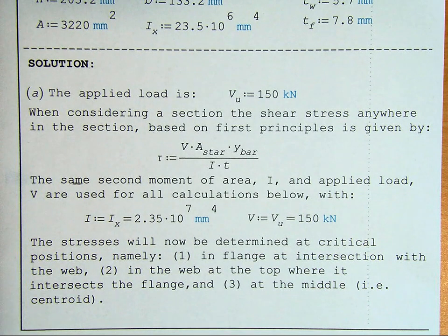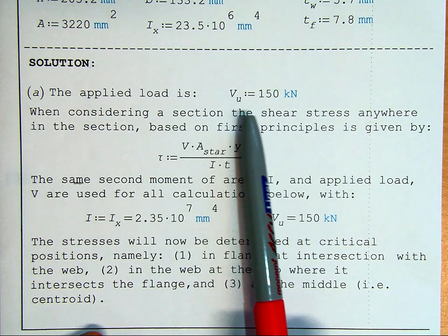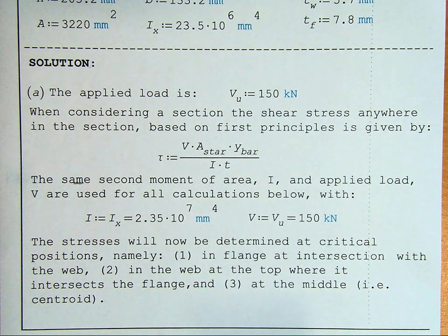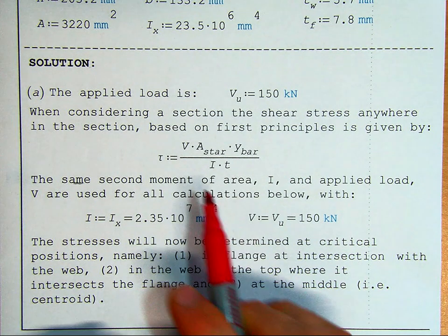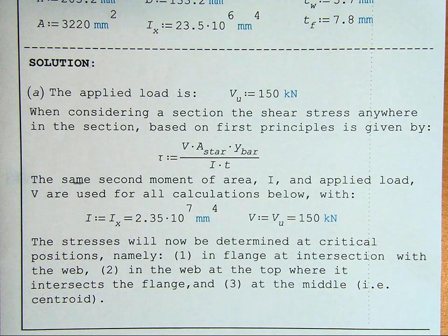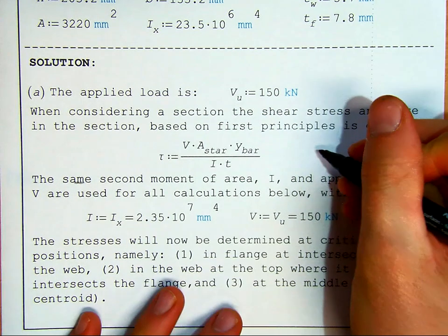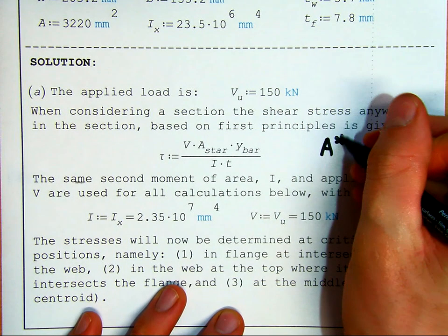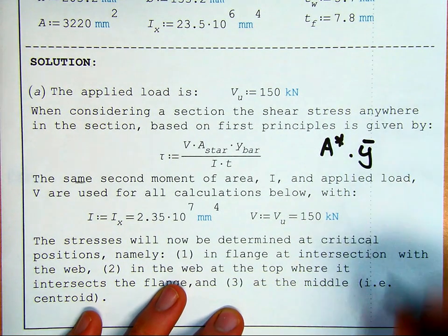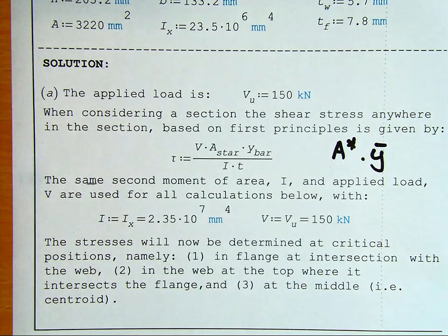Firstly, the load applied, so our ultimate load, our shear load, is 150 kN. When considering a section, the shear stress anywhere in the section, based on first principles, is given by tau equals V times A star times Y bar over I T. There are different ways of writing this; I've just simplified it to be as shown here.